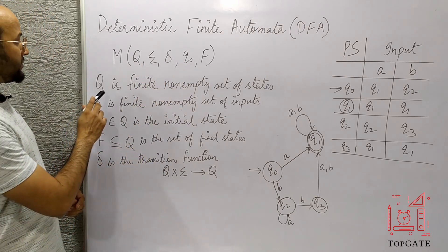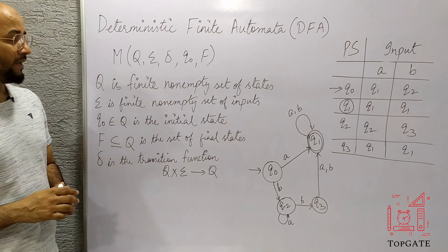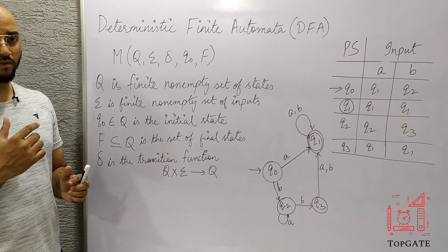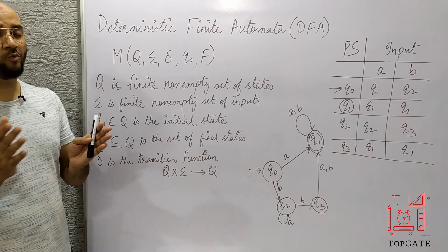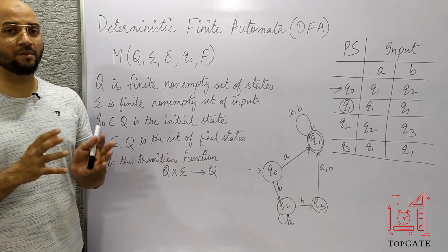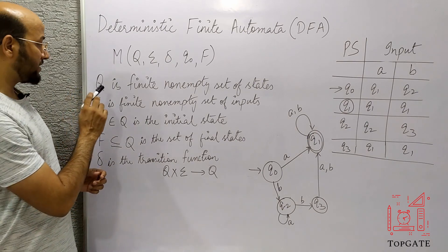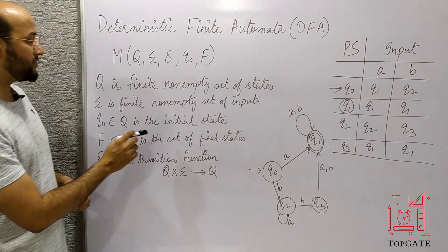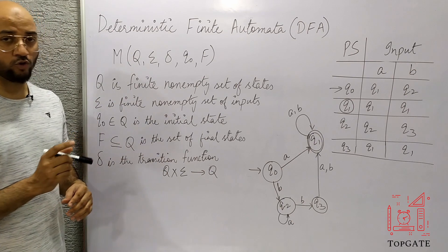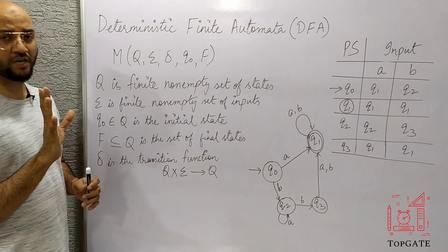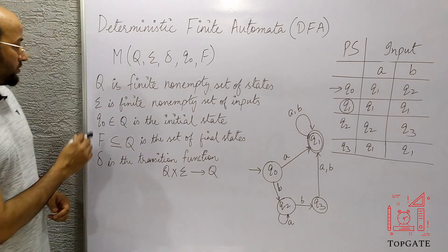Q is a finite non-empty set of states. When processing some computation, a machine transits from one state to another — that is called a state. There will always be a finite number of states and it should be non-empty. At least one state should be there, and it cannot be infinite states in this machine.